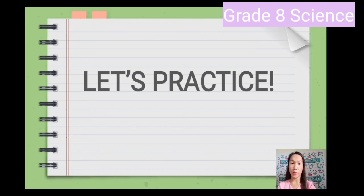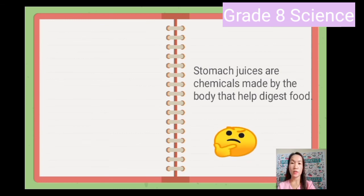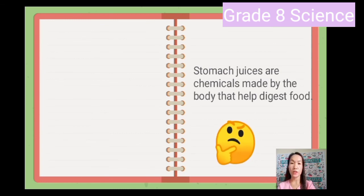I hope you enjoyed the video — I hope it helps you to have a better understanding about the digestion process. Now let's have a short exercise. All you have to do is to identify what phase is being described in the given statement. So let's have the first one: 'Stomach juices are chemicals made by the body that help digest food.'